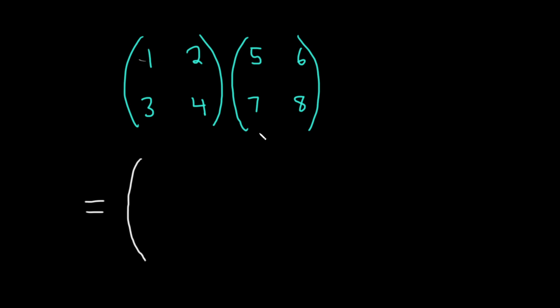So first row, first column, one times five plus two times seven. First row, first column, one times five plus two times seven.